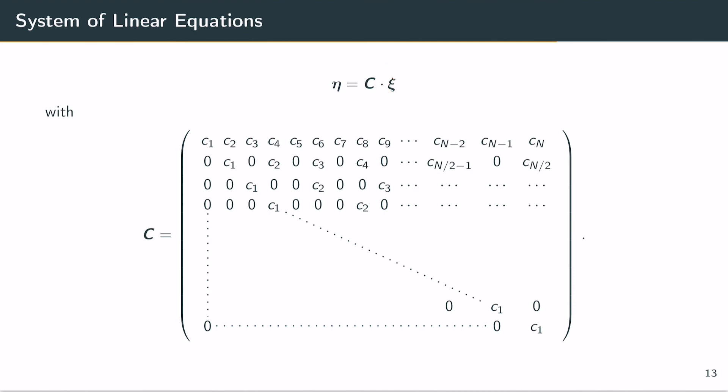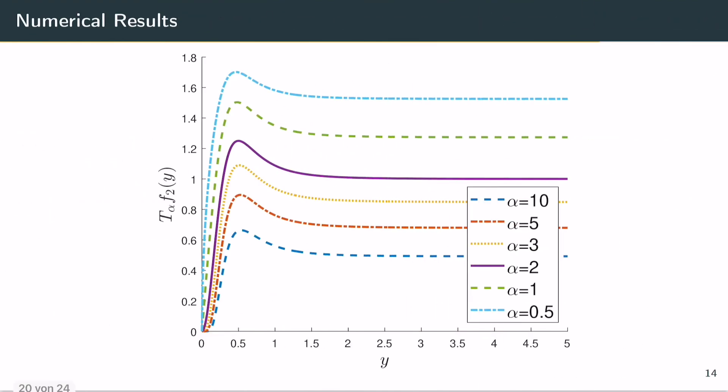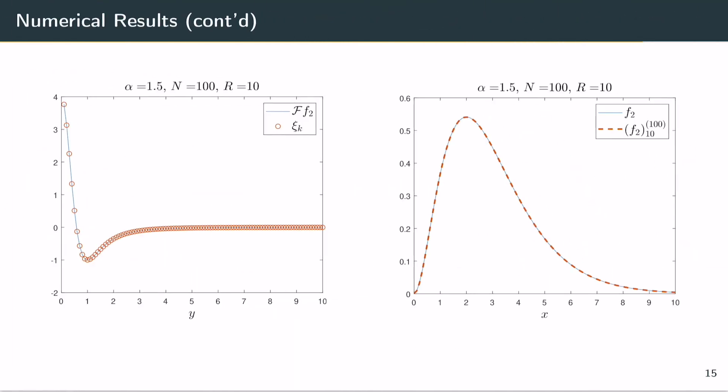To visualize this, let's take a look at the following numerical example. Here you can see the alpha sine transform for an example function f2 for various values of alpha. The red circles are the solution of our system of linear equations. What's left for us to do is to choose a suitable interpolation and apply the Fourier inversion, which gives us the result on the right hand side. The dotted line is the result of the inversion and the blue solid line is the actual function f.